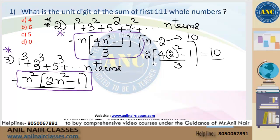So the first question, asking the sum of the first 111 whole numbers, could also appear as the sum of squares of the first 20 odd numbers — many variations are possible. The answer to the first question is 5. Don't make the mistake of treating it as natural numbers. Take a notebook, write down every important key point, and get ready for the second question.